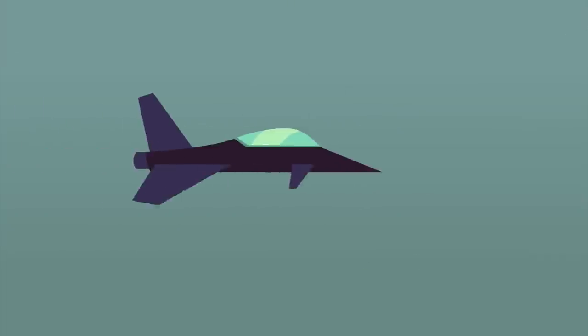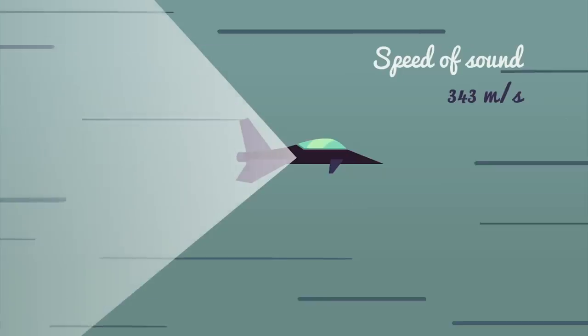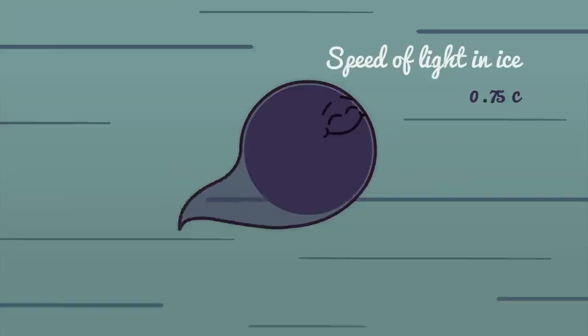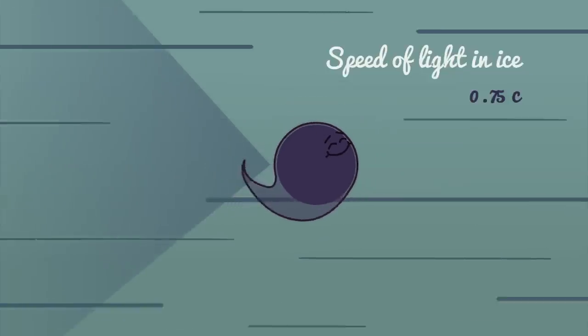In a similar way to how a jet that exceeds the speed of sound produces a sonic boom, these superluminal charged particles leave behind a cone of blue light, kind of a photonic boom. This light spreads through IceCube, hitting some of its detectors located over a mile beneath the surface.